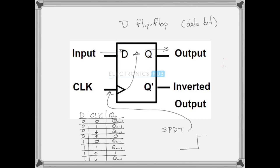By turning on the switch you can tell when you get the rising edge. You're going to feed the signal from your de-bounced switch into the clock. By pushing the button or turning on the switch from 0 volts to 5 volts, you've got a rising edge, and you can control what goes from the D input to the Q output. It's a pretty simple circuit. Make sure you understand how the D flip-flop works.